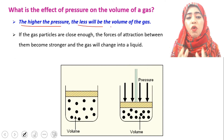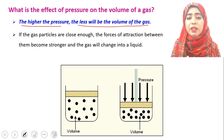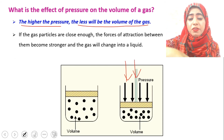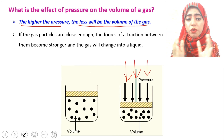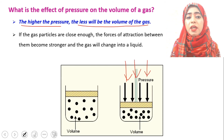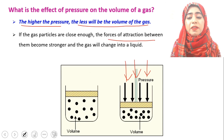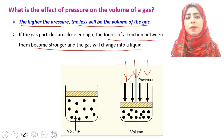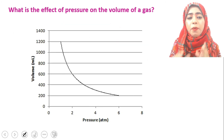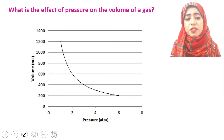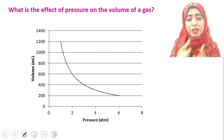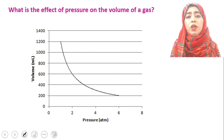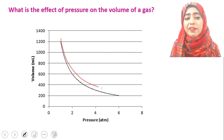So by increasing the pressure, volume will decrease. If we increase even more pressure on the piston, there will be stronger attraction, and the gas particles can also change into liquid state. If we make a plot between volume and pressure, by increasing the pressure, the volume of the gas will start decreasing.